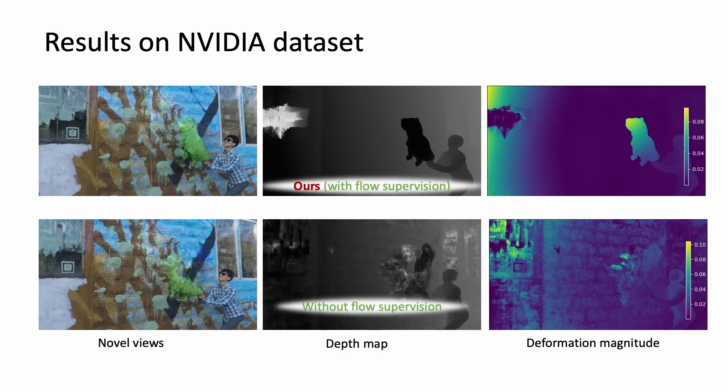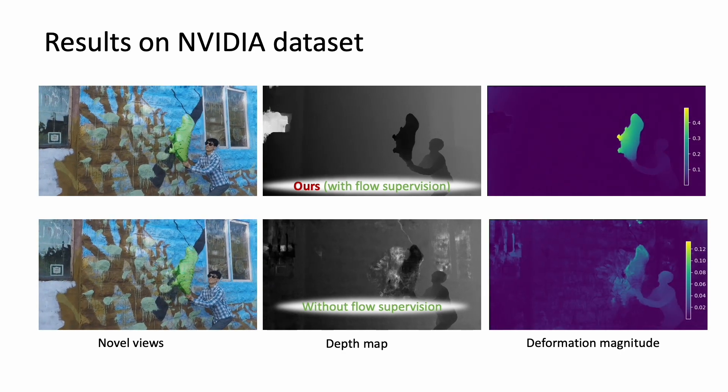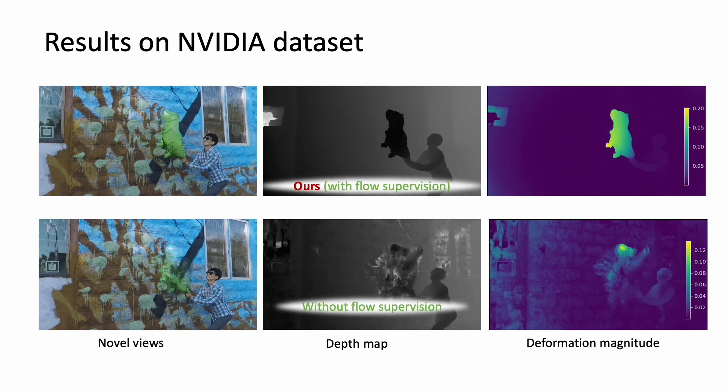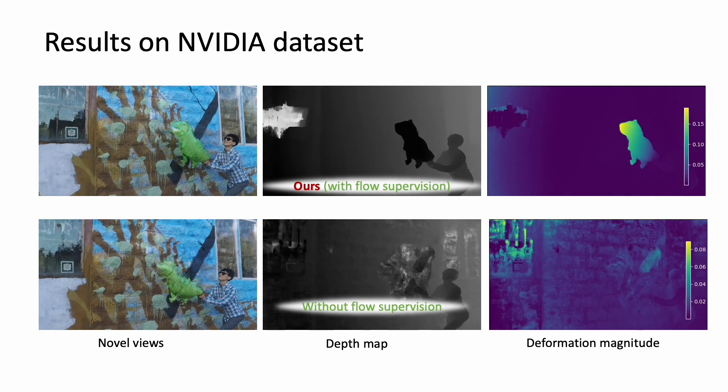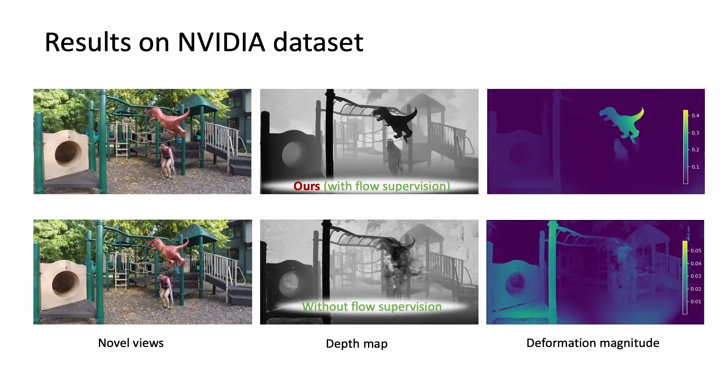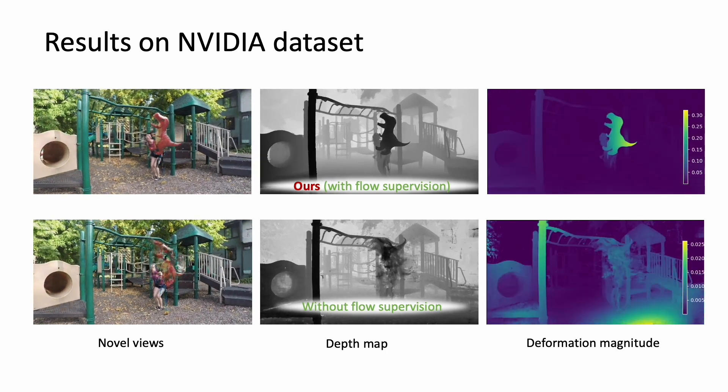By applying flow supervision to deformable NeRF, our method achieves remarkable improvements in monocular novel view synthesis compared to the baseline without flow supervision. Without flow supervision, as depicted in the second row, the baseline model struggles to reconstruct accurate depth maps and motion, resulting in poor quality view synthesis. However, with flow supervision, our method produces significantly improved depth maps and view synthesis results.